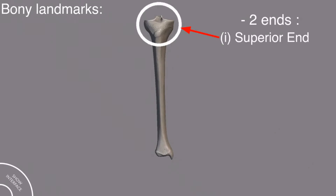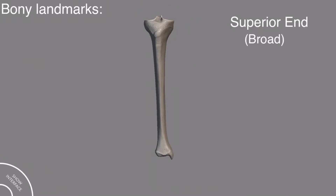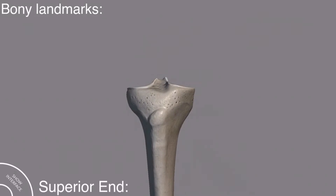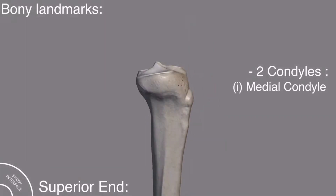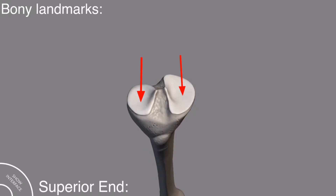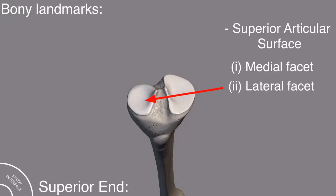The tibia bone has two ends — the superior end and the inferior end — and the shaft in the middle. The superior end is more broad than the inferior end. On the superior end there are two condyles: this is the medial condyle while this is the lateral condyle. This is the tibial tuberosity. These two are the superior articular surfaces — this one is the medial facet while this one is the lateral facet of the superior articular surface.